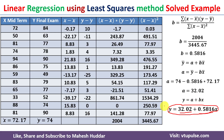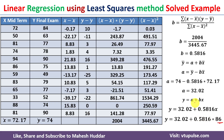Now we know the midterm grade x equals 86. Substituting: y equals 32.02 plus 0.5816 multiplied by 86. Solving gives y equal to 82.04. So if the midterm exam grade is 86, the predicted final exam grade is 82.04. This is how we use the least square method to find the best fitting line and predict the dependent variable given the independent variable.